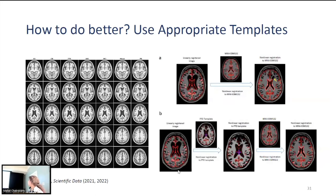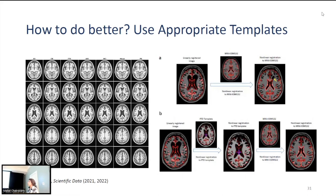So how to do better when you have problems with linear or nonlinear registration. You can use more appropriate templates. There are now many average templates developed based on Alzheimer's patients, aged individuals, Parkinson's disease, and different pathologies. You can use these as your registration targets to improve performance. Even if you want to use the ICBM template as your end goal, you can use one of these templates as an intermediate registration target and then register to MNI ICBM to improve your registration. The figure on the right shows a person with a lot of atrophy where the nonlinear registration to ICBM clearly failed, but by first registering to an FTD template and then to ICBM, the result improved.